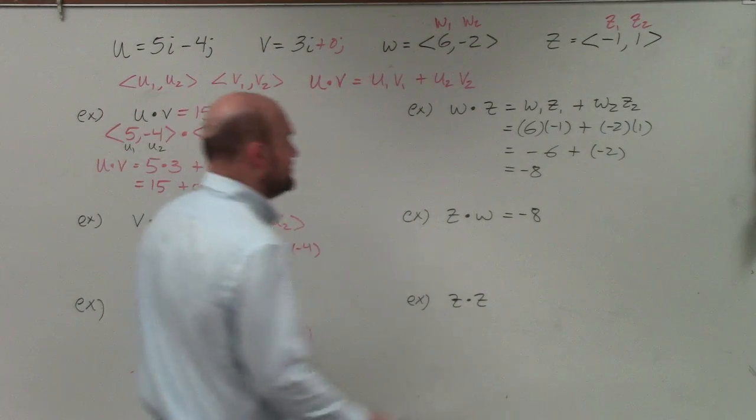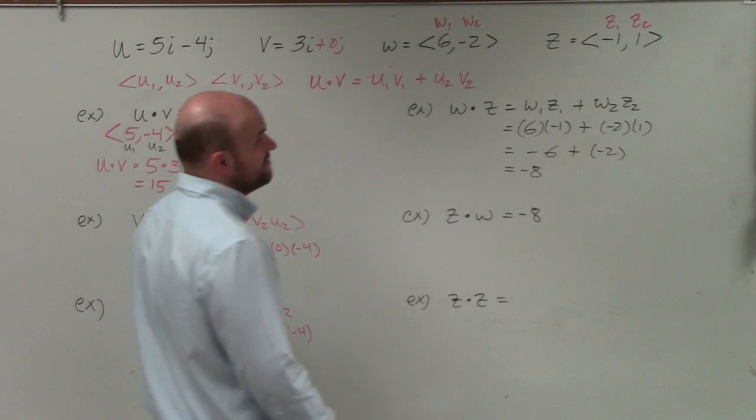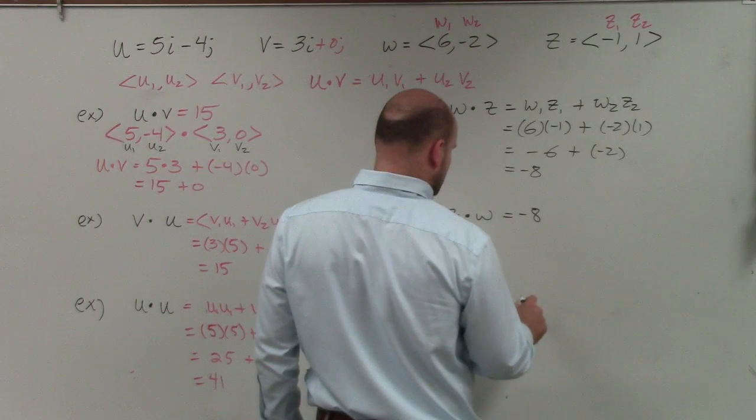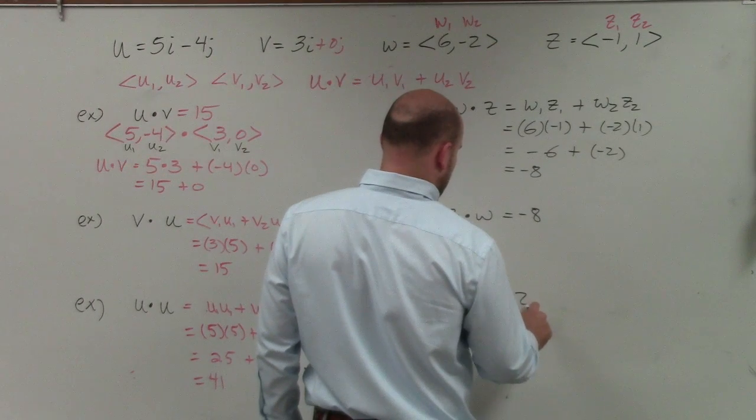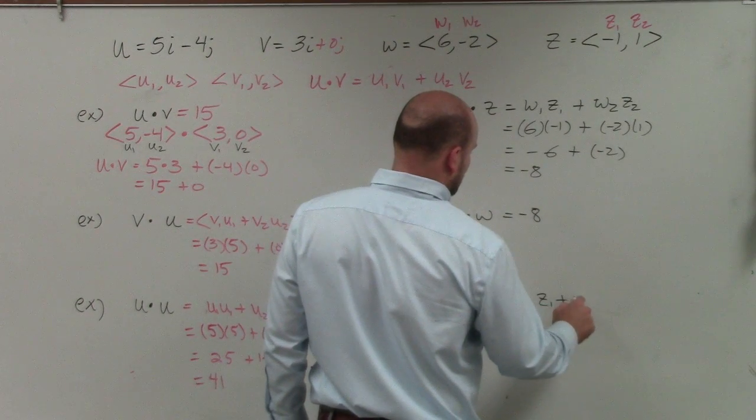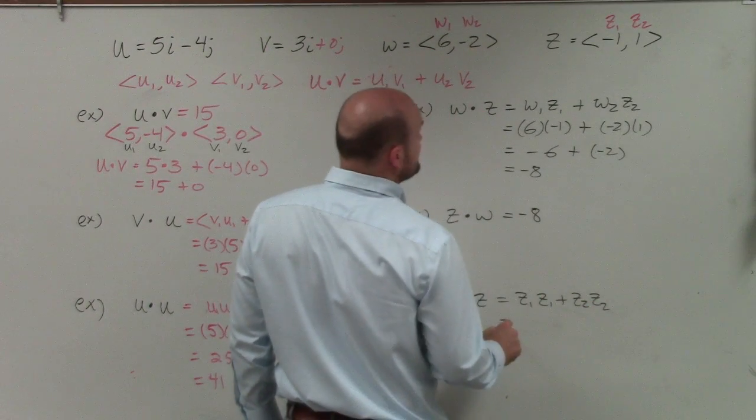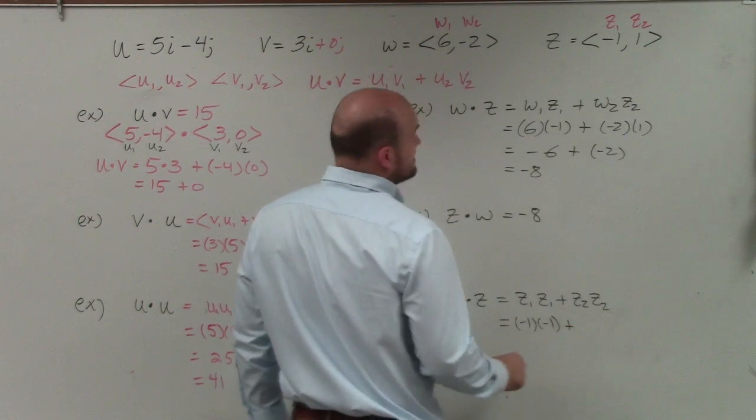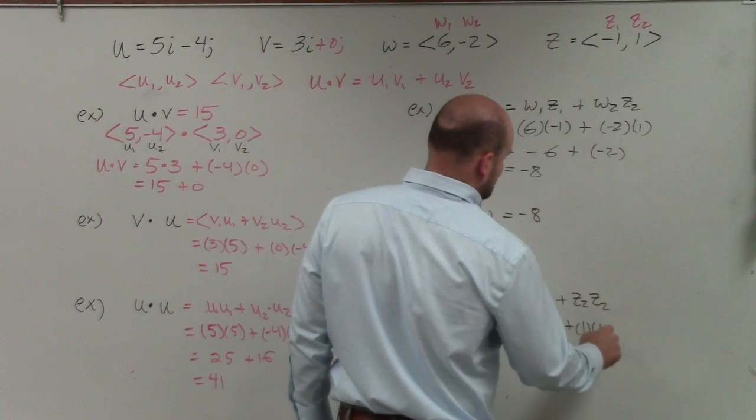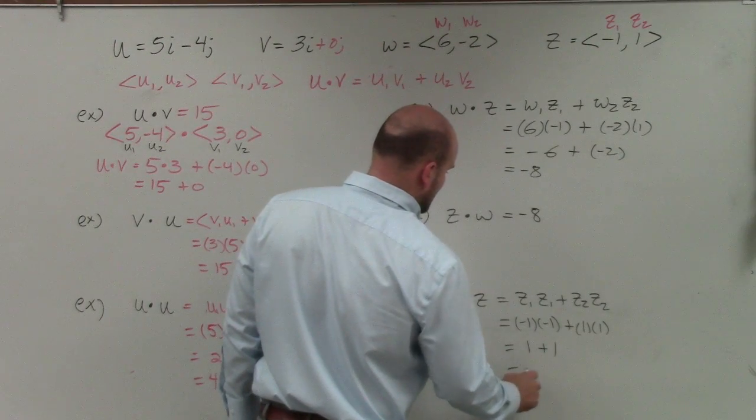And let's just do one last example. Here I have the dot product of z times z, so I have negative 1 and 1. So therefore, by applying the dot product here, I have z1 times z1 plus z2 times z2. So z1 is negative 1 times negative 1 plus z2, which is 1 times 1. So therefore, I'm left with 1 plus 1, which equals 2.